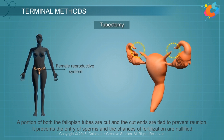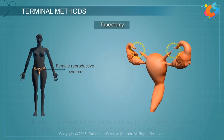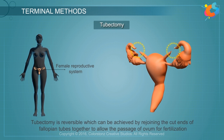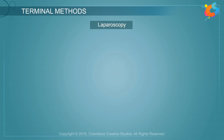Tubectomy prevents the entry of sperms and the chances of fertilization are nullified. It is reversible, which can be achieved by rejoining the cut ends of the fallopian tubes together to allow the passage of ovum for fertilization.